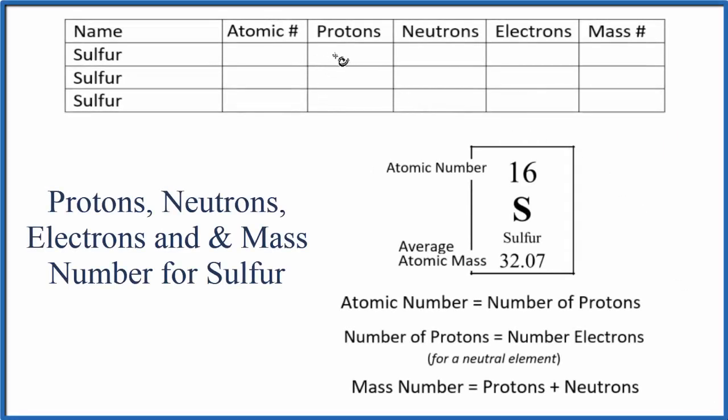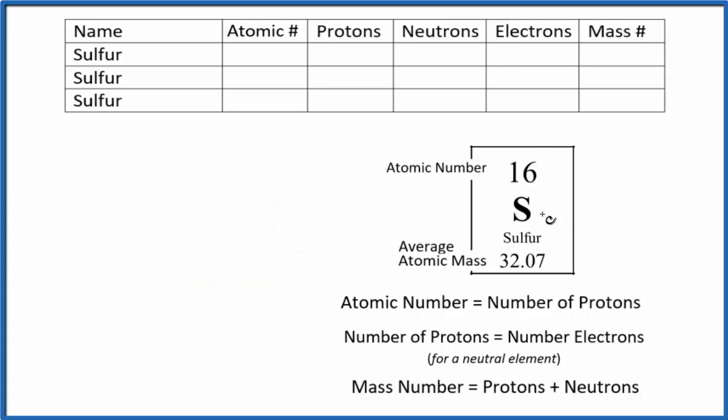In this video, we'll find the number of protons, neutrons, electrons, and the mass number for sulfur. So sulfur has several major isotopes, and we'll talk about those a little bit later. Let's fill the things in that we do know, just looking at the periodic table here.